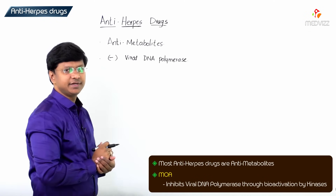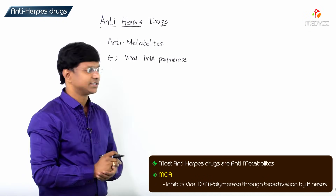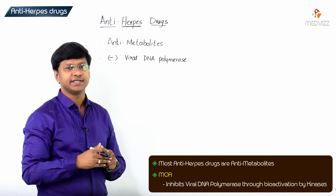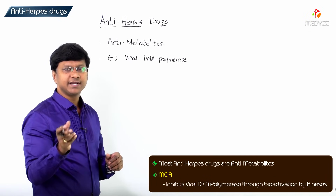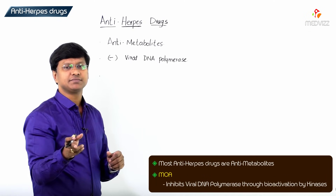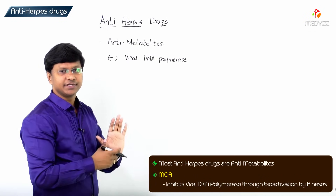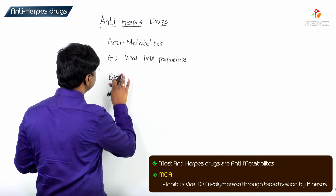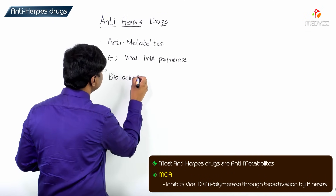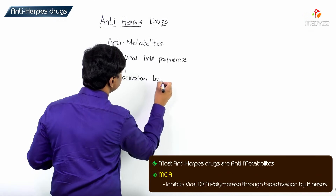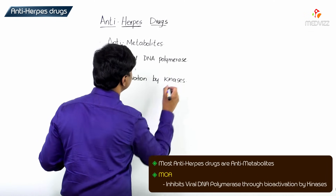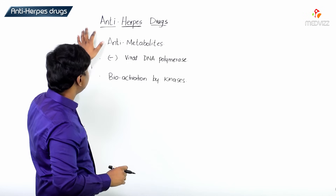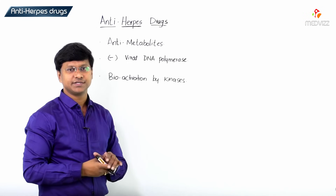Once this viral DNA polymerase is inhibited, the replication or the growth of the herpes does not occur. These anti-herpes drugs undergo bioactivation by kinases. After getting bioactivation by kinases, they will inhibit the viral DNA polymerase.